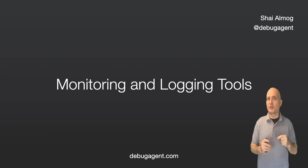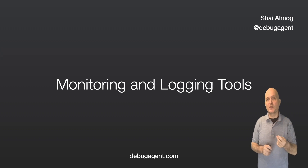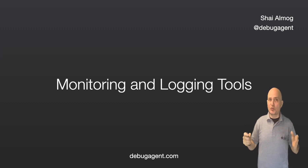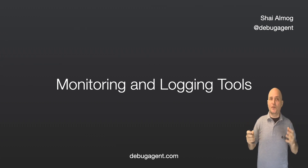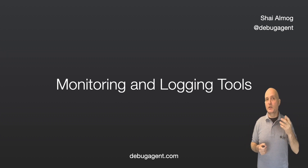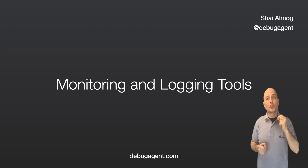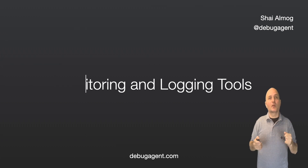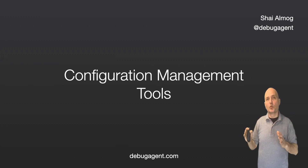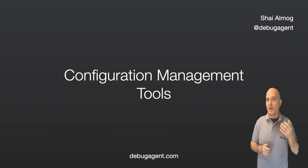Monitoring and logging tools allow you to keep track of the performance and behavior of your systems and applications. Popular monitoring tools include Nagios, Zabbix, and New Relic. Prometheus and Grafana are probably the most popular in this field in recent years. Popular logging tools include the ELK Stack — Elasticsearch, Logstash, and Kibana — as well as Graylog and Fluentd. Configuration management tools such as Puppet, Chef, and Ansible allow you to automate the configuration and management of your servers and applications.